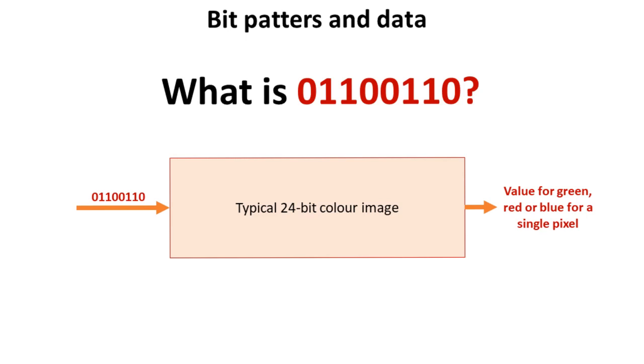If we threw it into a typical 24-bit colour image translator, we would end up with a value for the green, red, or blue hue for that single pixel.